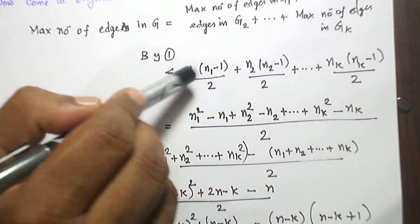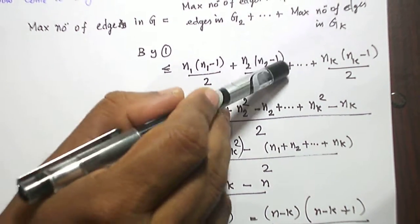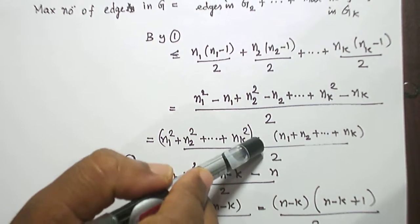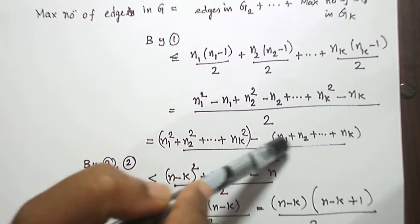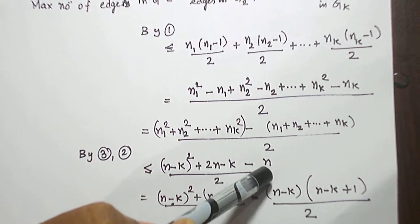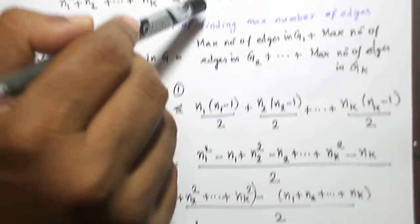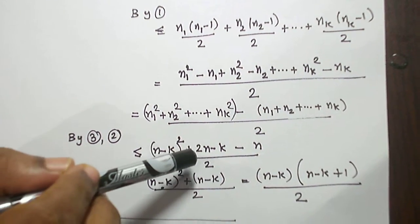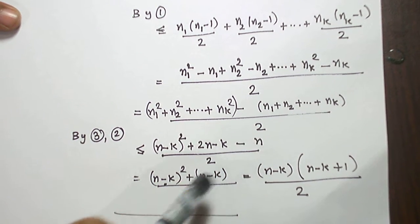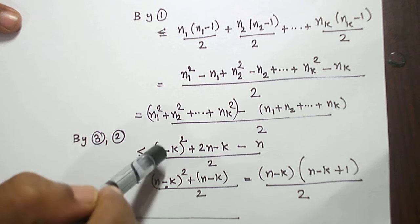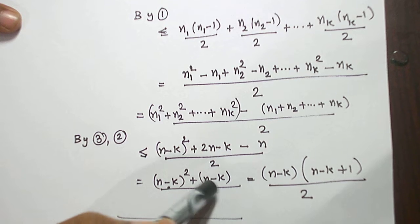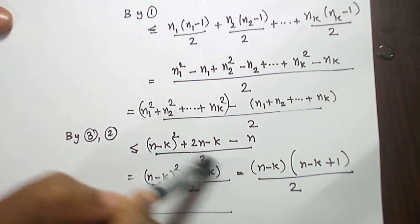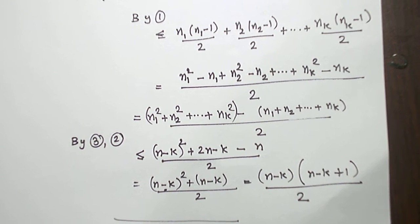Taking 2 as the LCM and expanding, the total maximum edges = [n1² - n1 + n2² - n2 + ... + nk² - nk] / 2 = [(n1² + n2² + ... + nk²) - (n1 + n2 + ... + nk)] / 2. Since n1 + ... + nk = n, this becomes [(n1² + ... + nk²) - n] / 2. Using inequality 3, the squared terms are ≤ (n-k)² + 2n - k, so the total ≤ [(n-k)² + 2n - k - n] / 2 = [(n-k)² + (n-k)] / 2. Factoring out (n-k) gives (n-k)(n-k+1)/2.